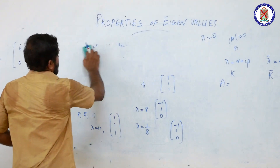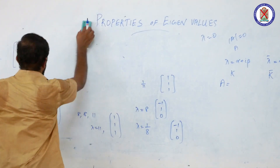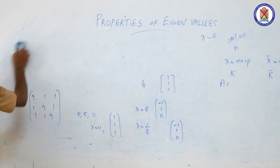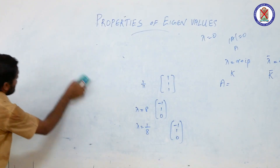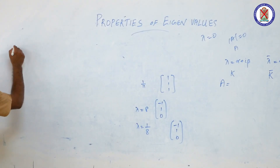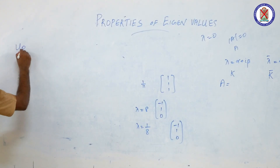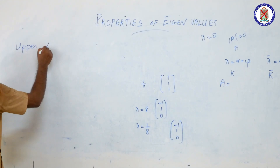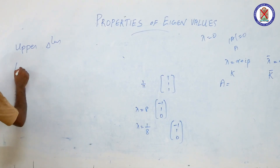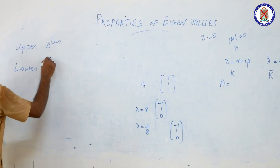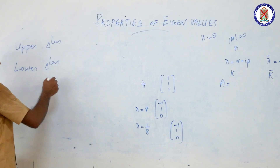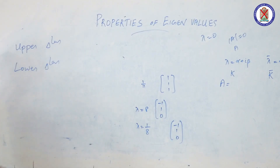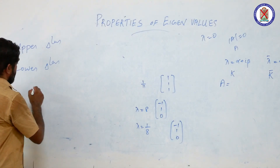Another property: if A is a triangular matrix — either upper or lower triangular — then the eigenvalues of A are its diagonal elements.